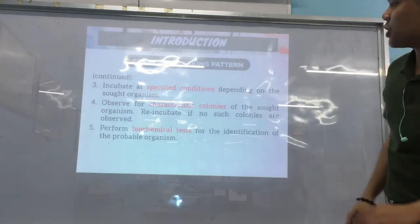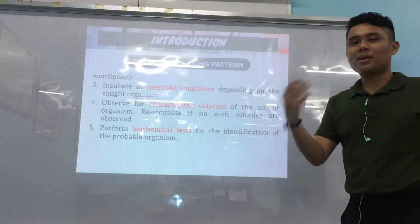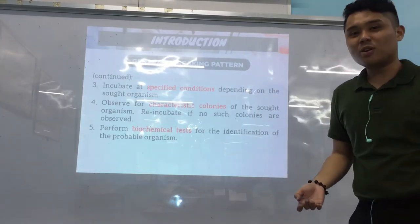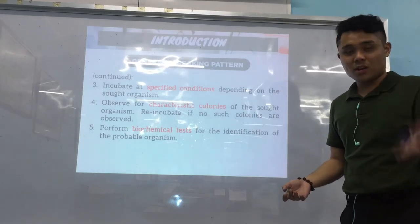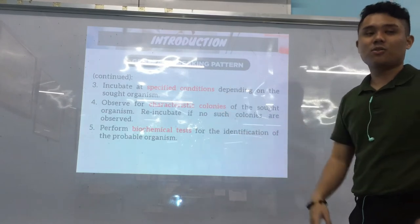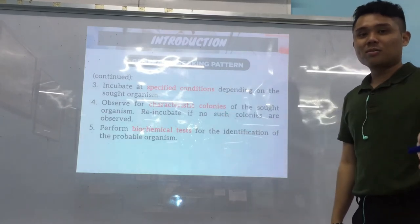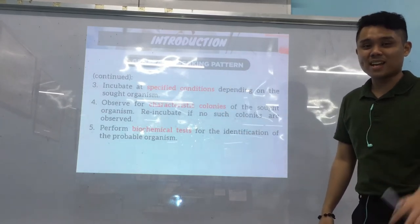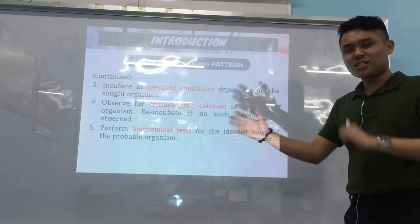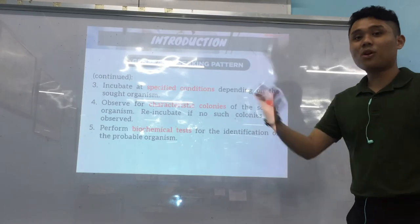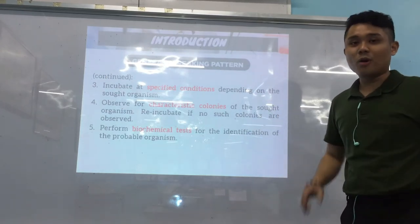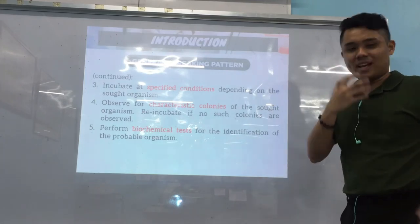After inoculation, incubate at specified conditions. For enteric organisms, use normal incubation. For fastidious organisms like Haemophilus or Neisseria, use a candle jar or CO2 incubator. Then observe characteristic colonies — colonial morphology: size, opacity, elevation, shape. Then perform biochemical tests for identification.